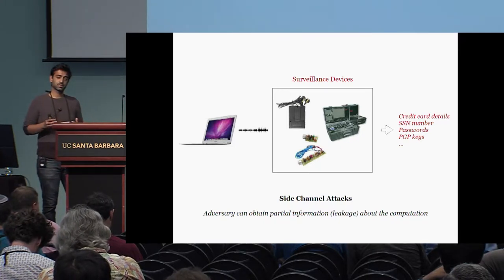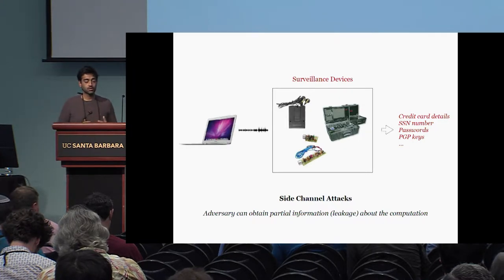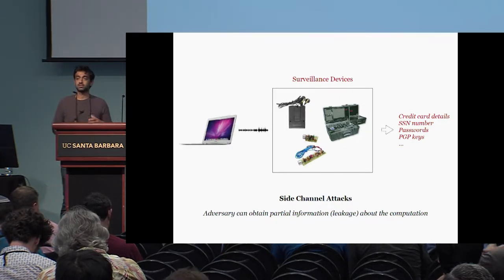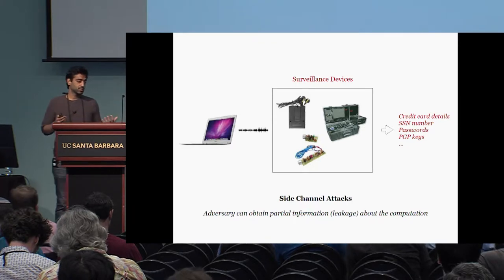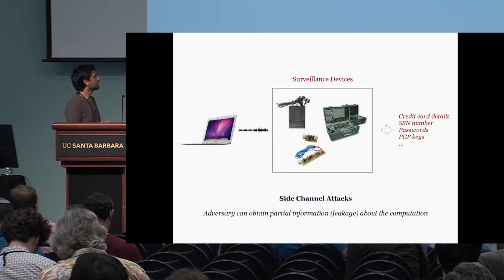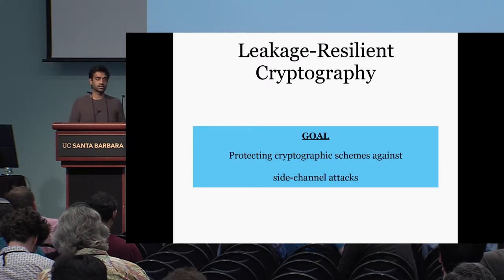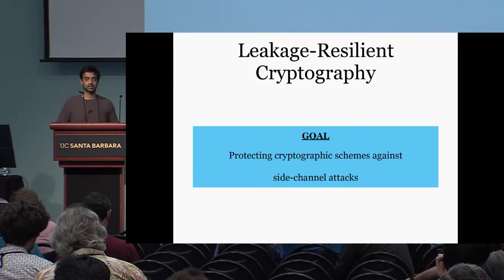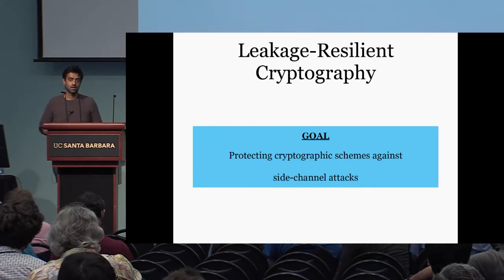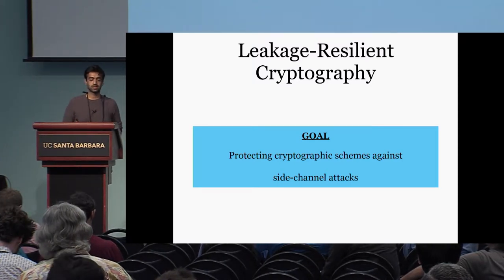There are various types of side-channel attacks studied in the literature. In this talk, I'm going to focus on side-channel attacks where the adversary obtains some partial information about the computation. So how do we actually protect our devices against these side-channel attacks? This question is not new. There is an entire area in cryptography that studies these sort of questions, and this is the area of leakage-resilient cryptography. The goal in this area is to come up with cryptographic schemes that resist side-channel attacks.